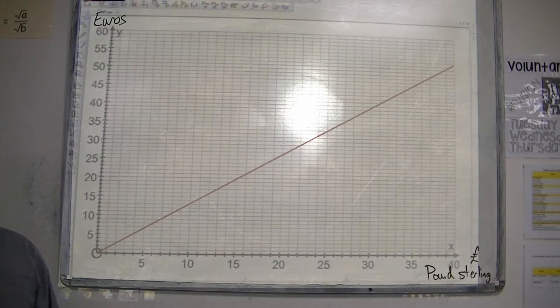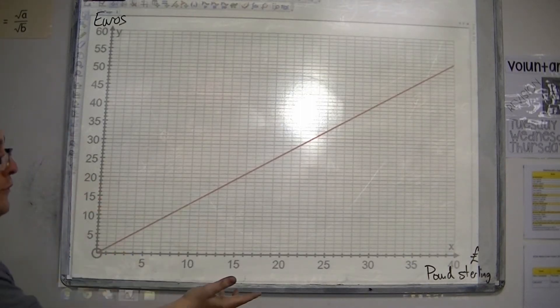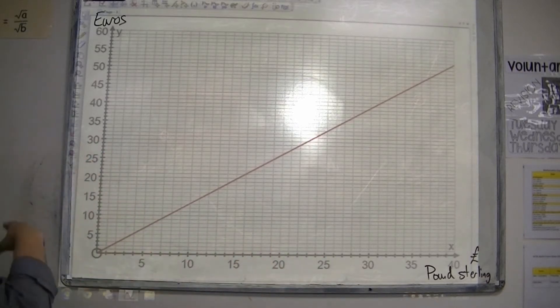So, conversion graphs are used to convert, say, one currency into another. This one shows pound sterling into euros.